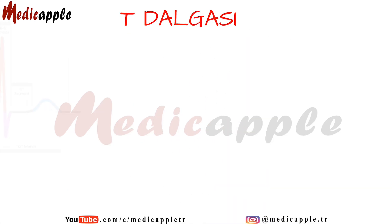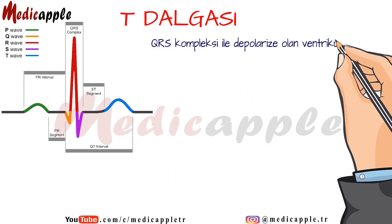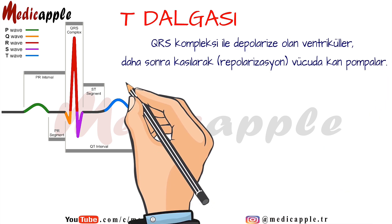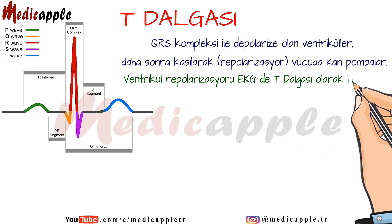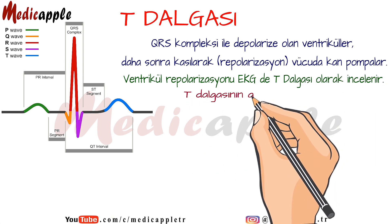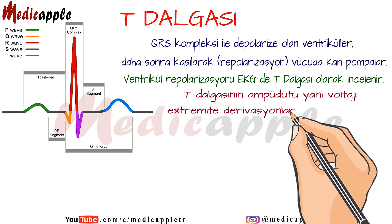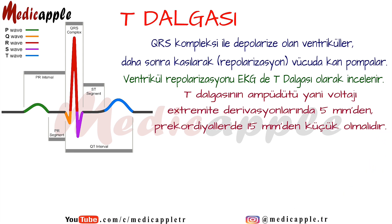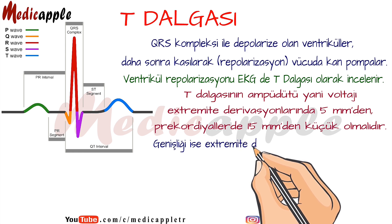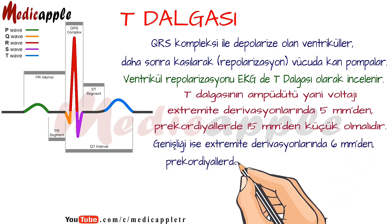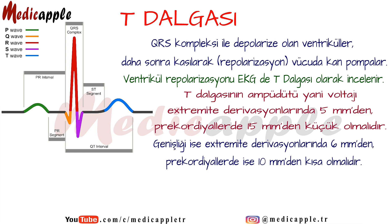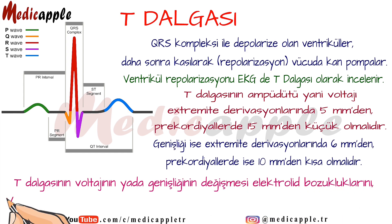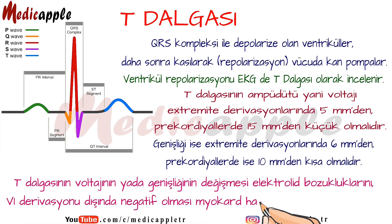T wave. The ventricles, which are depolarized by the QRS complex, then contract and pump blood to the body. Ventricular repolarization is examined as a T wave on the ECG. The amplitude of the T wave should be less than 5 mm in the extremity leads and less than 15 mm in the precordials. Its width should be shorter than 6 mm in the extremity leads and less than 10 mm in the precordial leads. Changes in the voltage or width of the T wave suggest electrolyte disturbances, and if it is negative outside the V1 lead, it suggests myocardial damage.